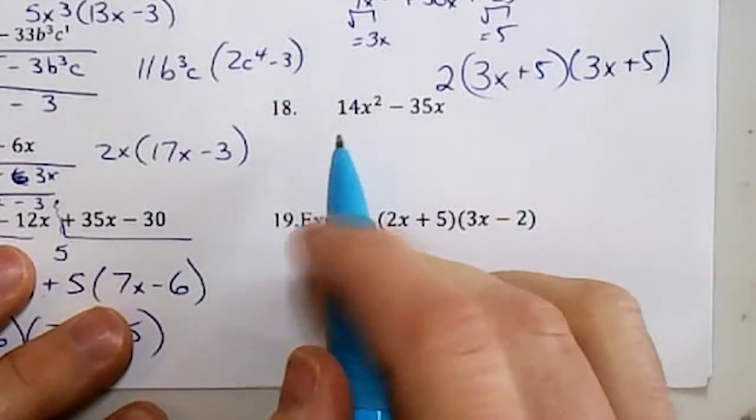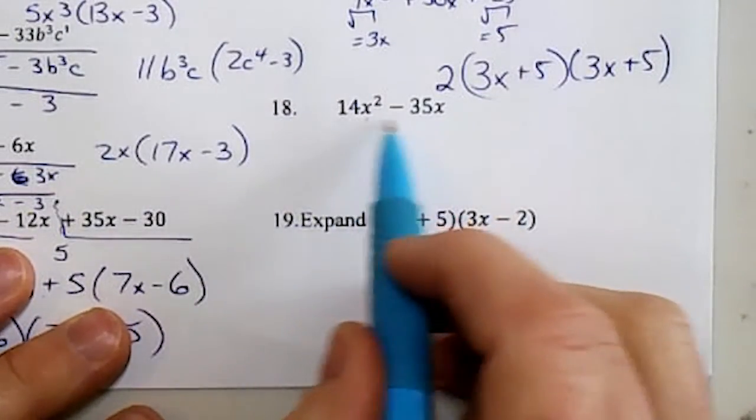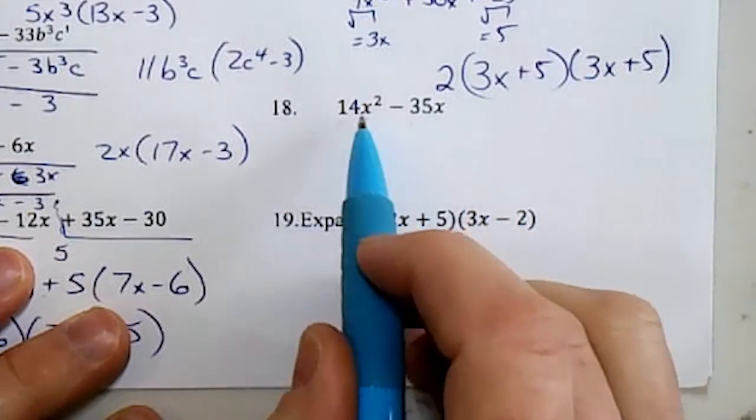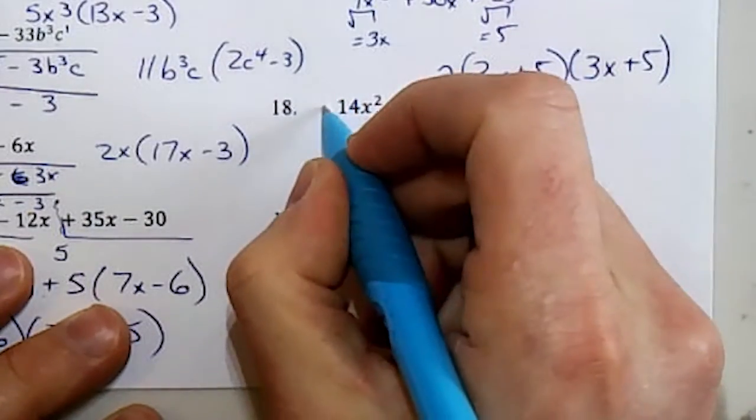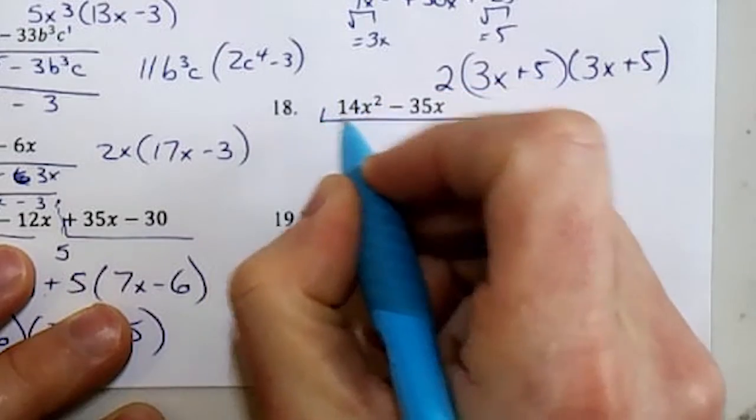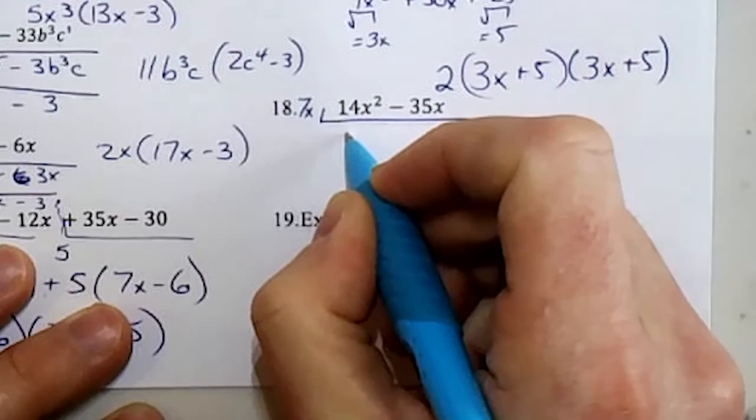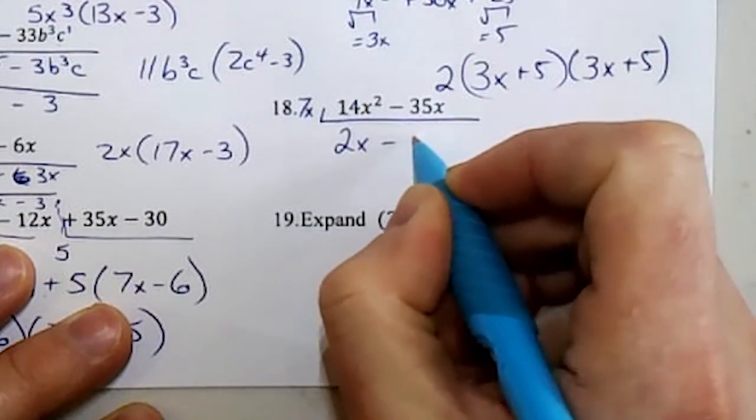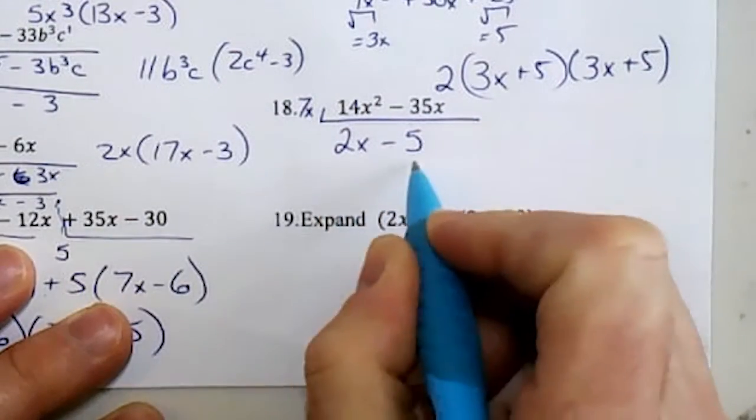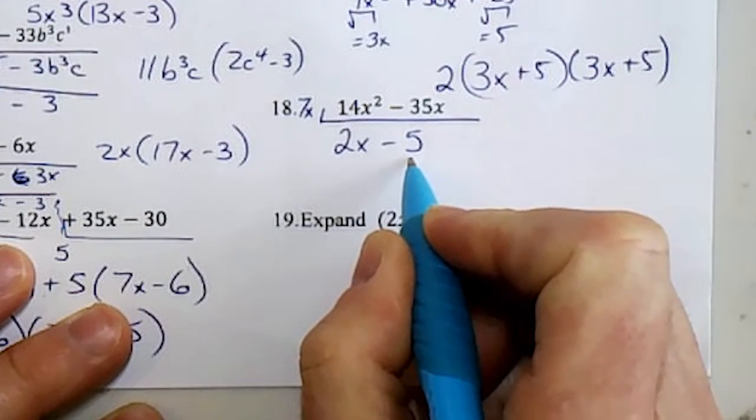This next one kind of looks like a difference of squares, but right away I see there's x's in both. So GCF, I can take out 7 from both, and I'm going to put 7 and x, take them both out at the same time. And then I'm done. 2x and 5, nothing goes into that.